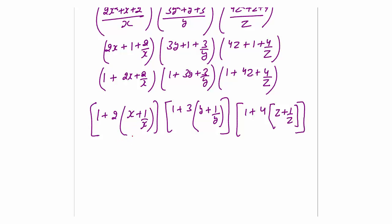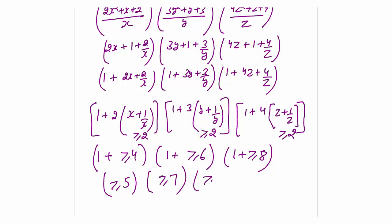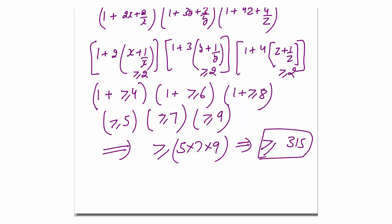Since x, y, z are positive real numbers, x+1/x ≥ 2, y+1/y ≥ 2, z+1/z ≥ 2. So each bracket is: 1 + 2×2 = 5, 1 + 3×2 = 7, 1 + 4×2 = 9 at minimum. The minimum value of the product is 5 × 7 × 9 = 315.